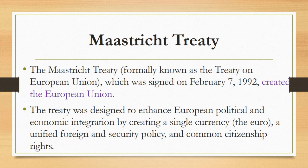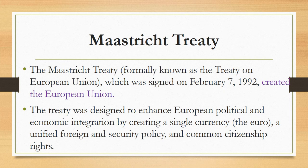The Maastricht Treaty was designed to enhance European political and economic integration by creating a single currency — the Euro — a unified foreign and security policy, and common citizenship rights, and by advancing cooperation in the areas of immigration, asylum, and judicial affairs. In this way, the European Union came into being. The EU was awarded the Nobel Peace Prize in 2012 in recognition of the organization's efforts to promote peace and democracy in Europe.